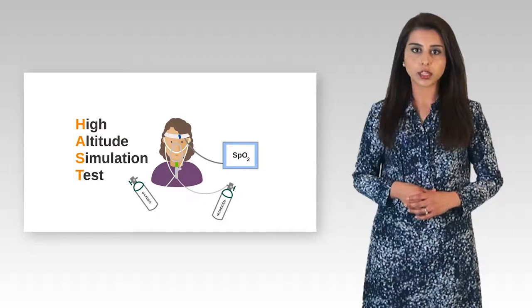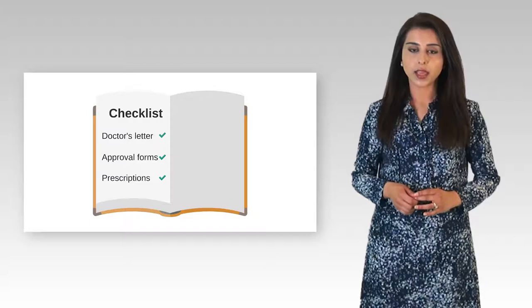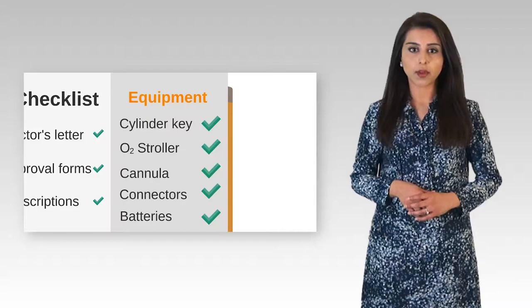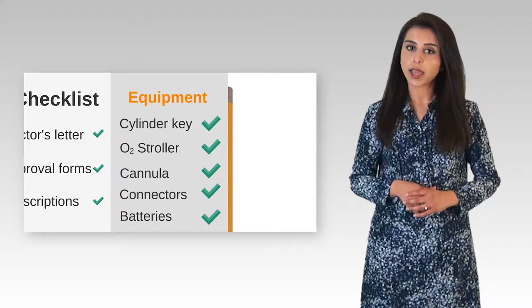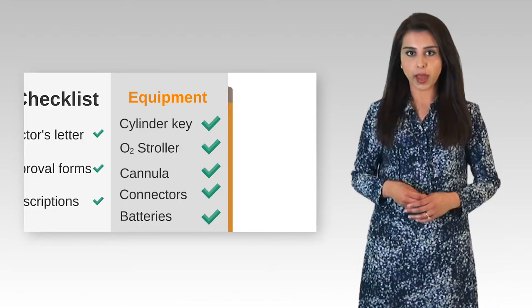A checklist is a good way of keeping all of your information in order. You must have your doctor's letter, your approval forms and your oxygen prescription. Now for your equipment. Remember, if you're using a cylinder, also make sure you pack your cylinder key. Always have proper storage, such as a stroller. Don't forget to pack your cannula, such as your nasal cannula, your pendant or your mask. And it is a good idea to have a few spare connectors in case one breaks or gets lost on transit. And lastly, always have enough charged batteries available for use.